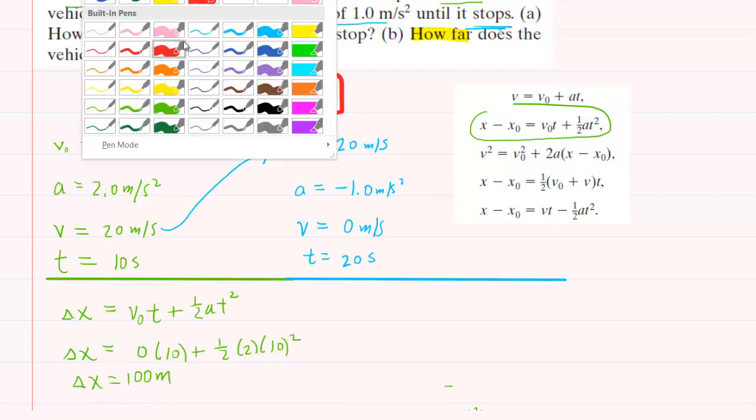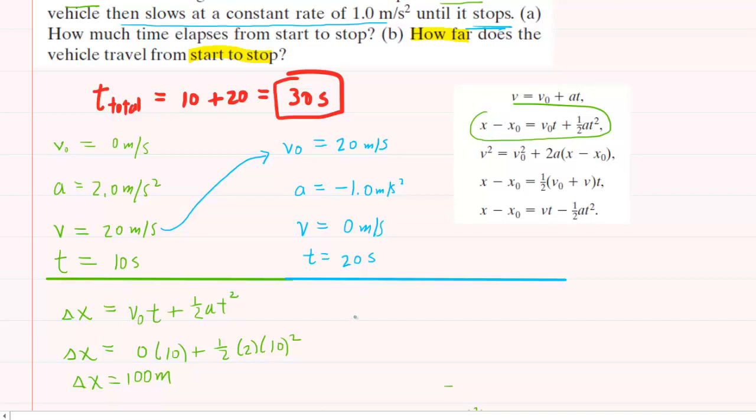And now over to the blue portion. We'll try the same equation here. So the displacement equals the initial velocity, which was 20, times the time, which is also 20, plus 1 half times the acceleration, which is negative 1, and then times the time squared. So let's work this out. And when we do so, we get 200 meters for the displacement during the blue portion of the journey.